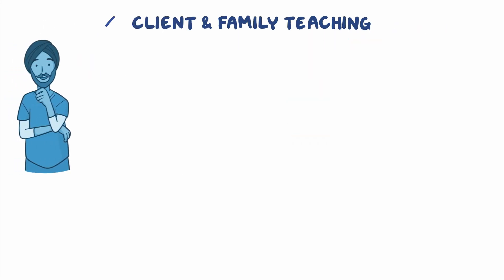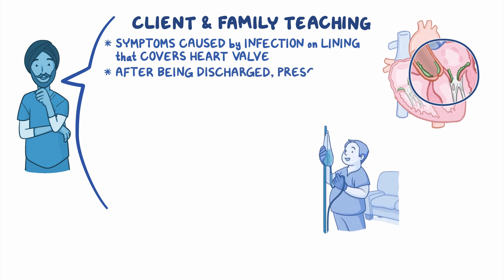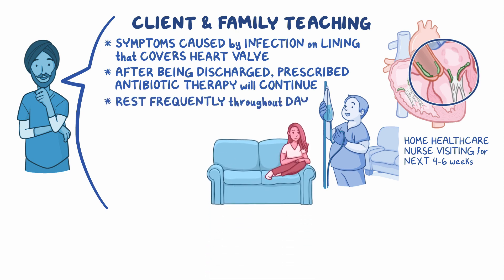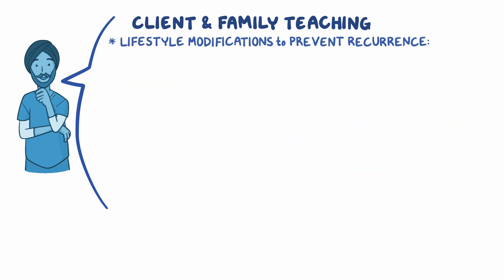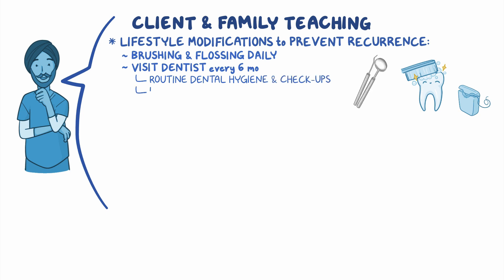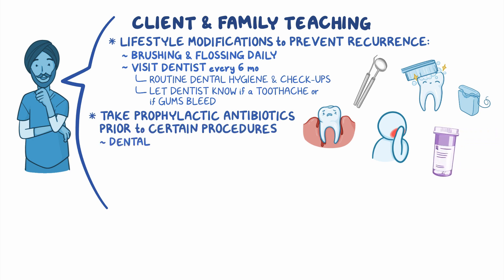Moving on to client and family teaching: explain how their symptoms are being caused by infection on the lining that covers their heart valve. Let them know that after being discharged, their prescribed antibiotic therapy will continue, so the home healthcare nurse will be visiting for the next 4-6 weeks to continue their IV therapy. During this time, encourage your client to rest frequently throughout the day and to return to their normal activities slowly. Review lifestyle modifications to help prevent recurrence of endocarditis. Emphasize the importance of maintaining good oral hygiene by brushing and flossing daily. Remind your client to visit their dentist every 6 months for routine dental hygiene and checkups, and to let their dentist know if they have a toothache or if their gums bleed when they perform oral hygiene. Explain the importance of taking prophylactic antibiotics prior to certain procedures, such as dental, respiratory, or surgical procedures, and to always treat any cuts or wounds right away.